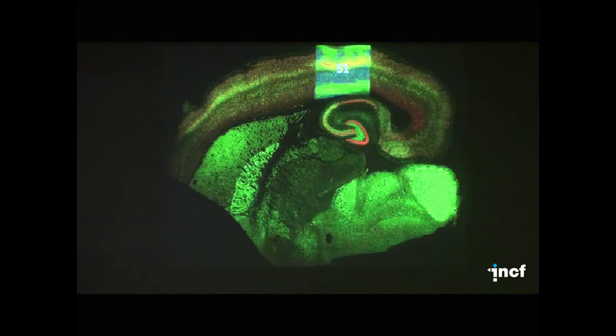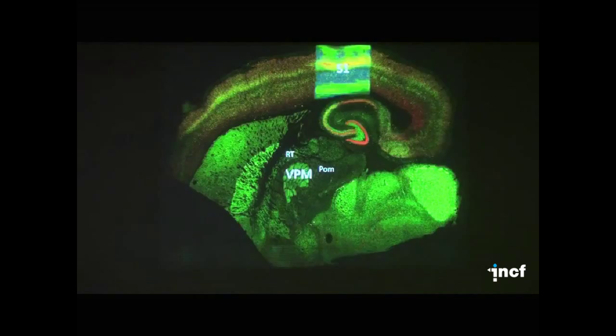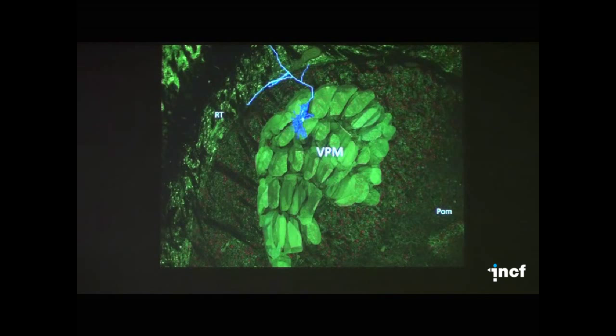What we're interested in now is: how is such a cortical column activated when a whisker is deflected? What happens when the animal is whisking and exploring its environment? Like all cortices, the cortical column gets input from the thalamus. If we zoom in, we see a barrel-like pattern in the thalamus as well — each ovoid processes information from a related whisker and relays it as input signals to the corresponding cortical column.